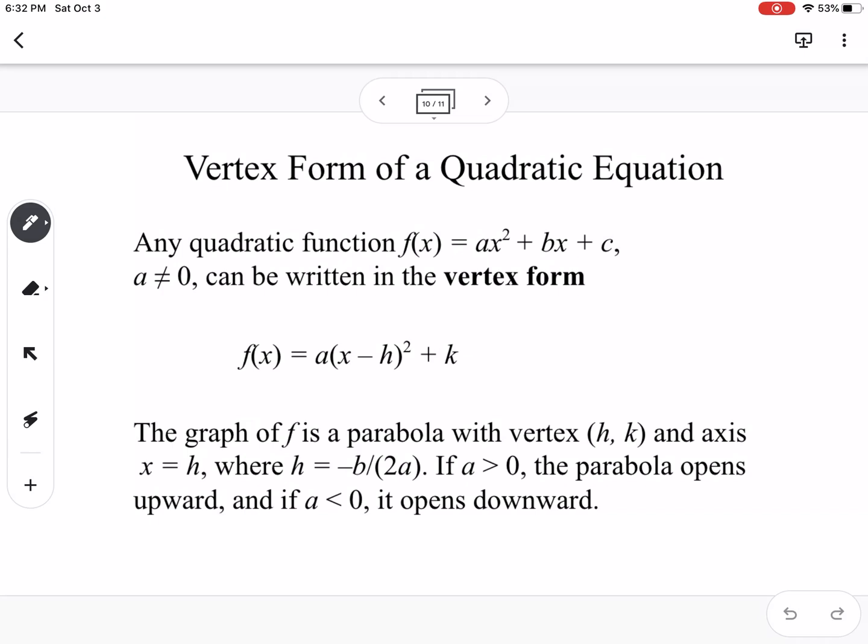So this is now a refresher of vertex form. So we have a times (x - h)² + k. It talks about if we have it in standard form, you can find the vertex by taking -b/(2a), and then plugging that value back into the equation to find your y value. And then if a is positive, it opens upward. If a is negative, it opens downward.